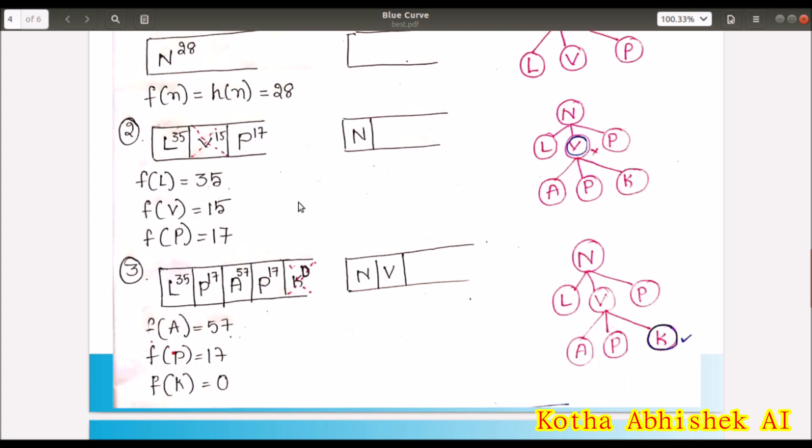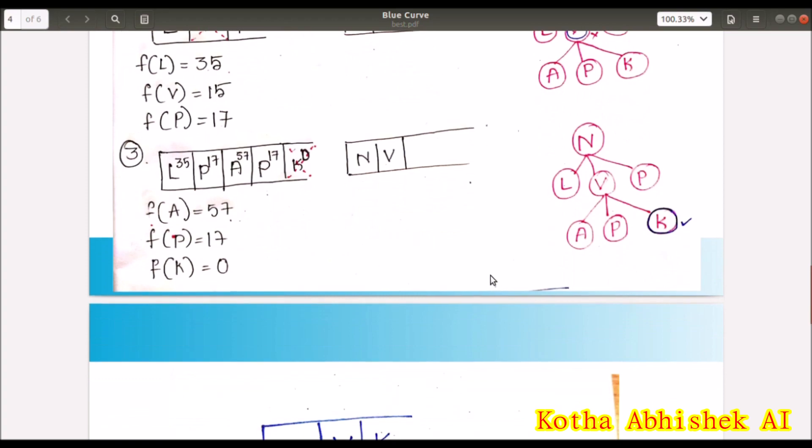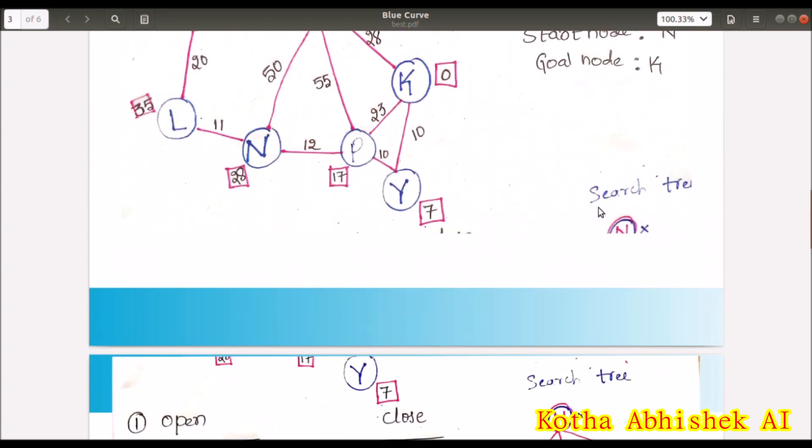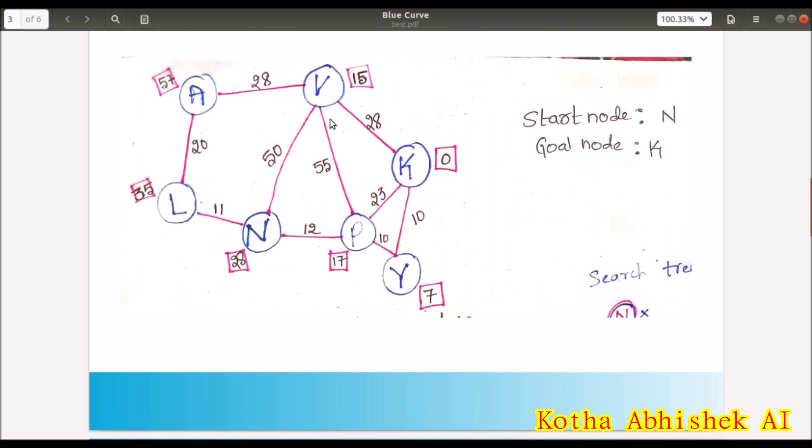Next we will process V. What is V's connections? It has P, N, A. So N is already in close. So no need of writing there. Now we will write A, P and K.